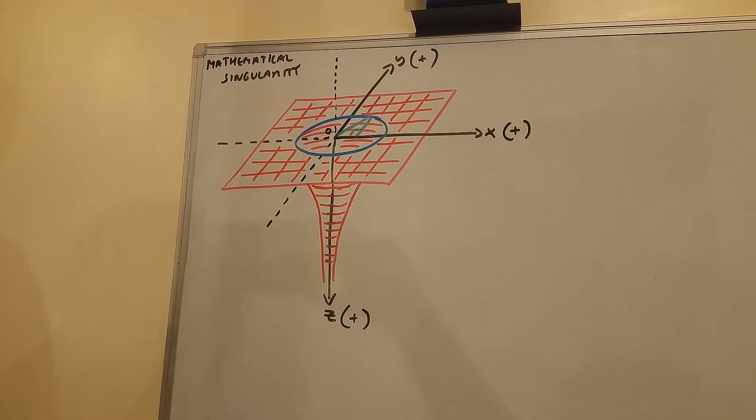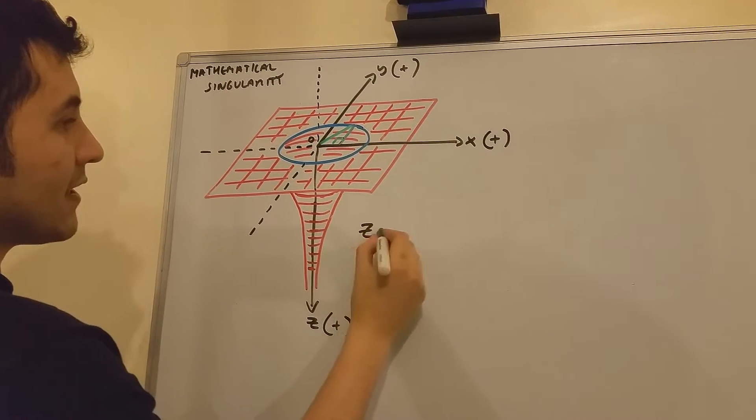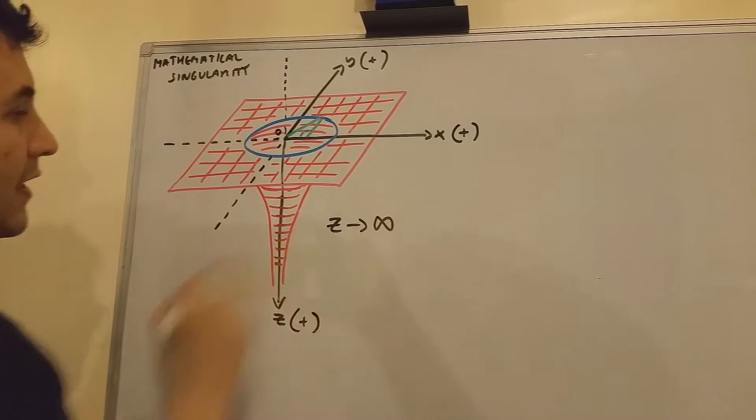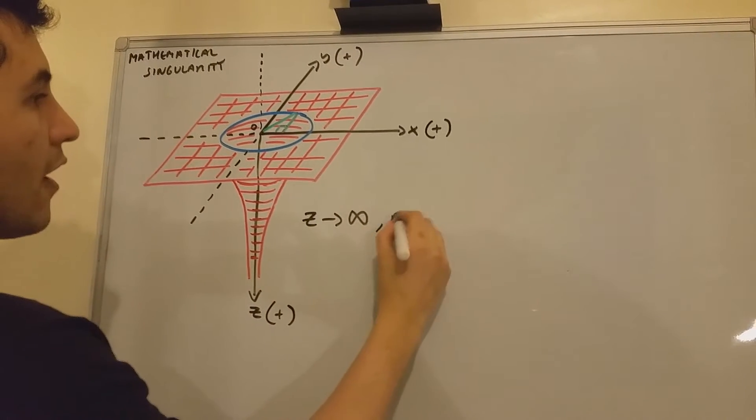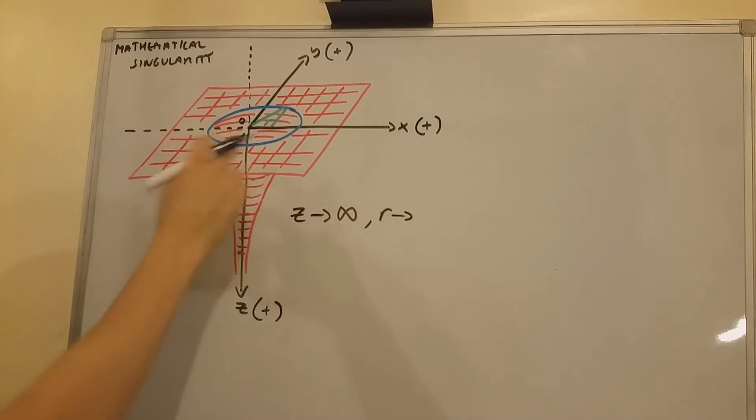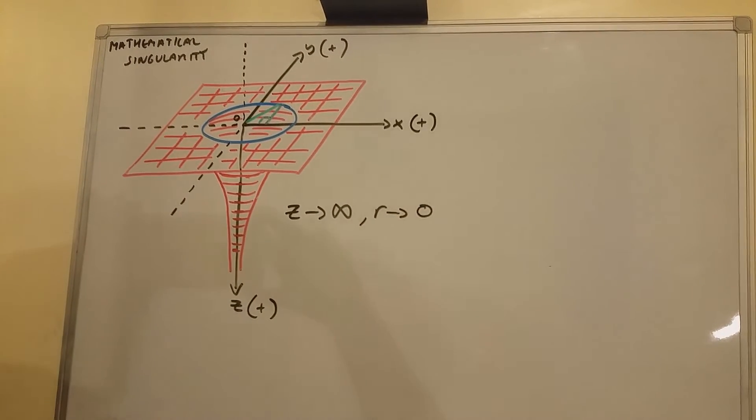What you need to know is that as z approaches infinity, as this height approaches infinity, r, which is the radius of these concentric circles, approaches zero.